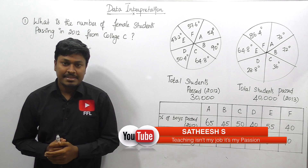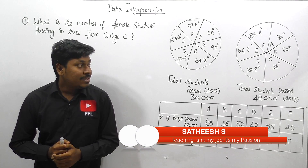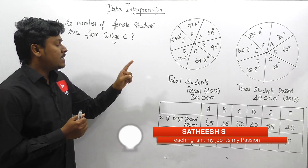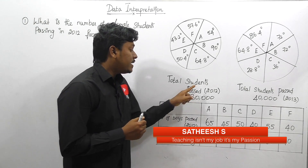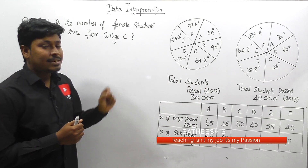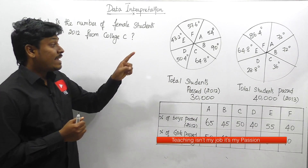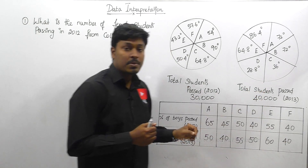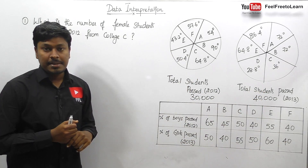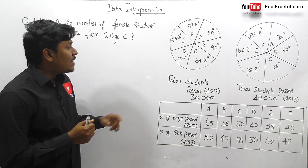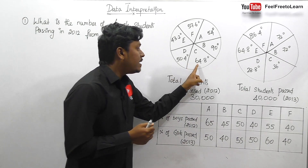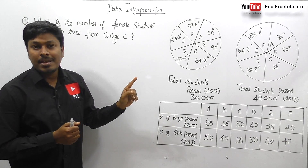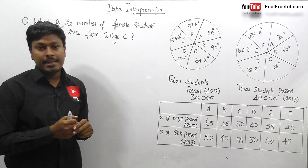Let me move on to DA number 6. Friends, here they have given two pie charts and one table chart. The first pie chart shows total students passed in the year 2012, that is 30,000 students, and the second pie chart where total number of students passed is 40,000 but in the year 2013. All the values in both the pie charts are given in degrees — 64.8 degrees, 43.2 degrees, and so on.